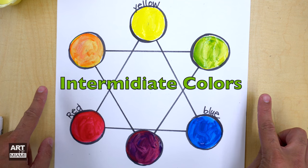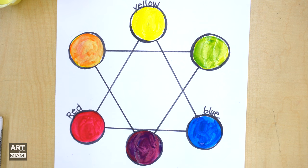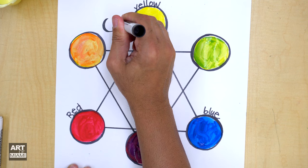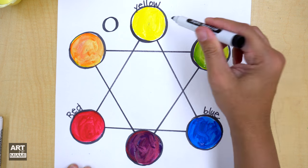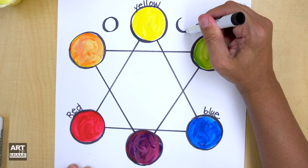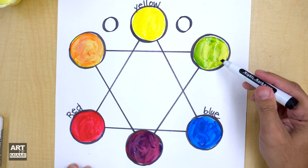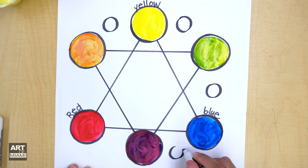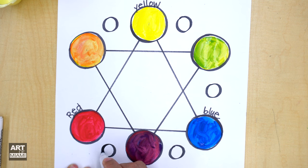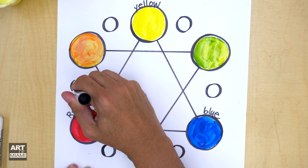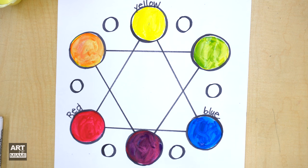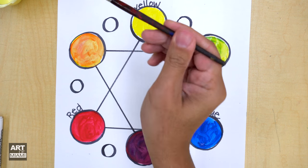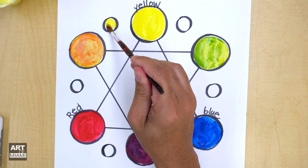Now we're ready for the intermediate colors. Intermediate colors are colors in between two colors. Yellow and orange will be one. So I'm going to make a little circle in between those two. Yellow and green. Circle between those two. Green and blue. Circle and on and on and on. That's going to make the intermediate colors. So just like the word implies, intermediate colors are in between two colors. Yellow and orange will be called yellow-orange.